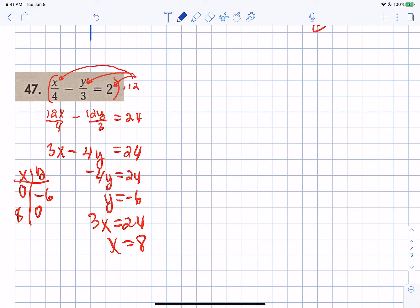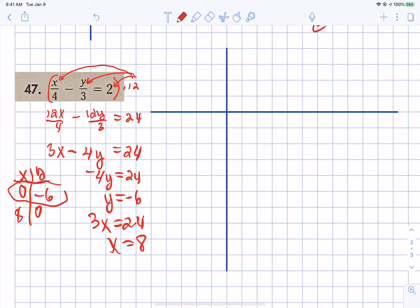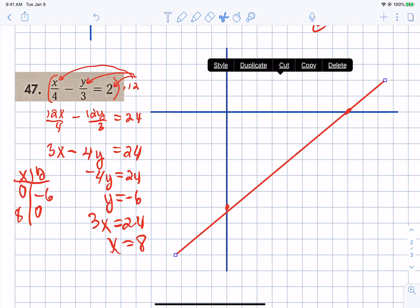So let's draw our graph. So what we know is that we hit the y-axis at negative 6. We hit the x-axis at positive 8. Connect them. And then put your arrows on there. Does anybody have a question about 47?